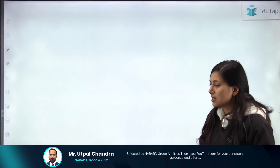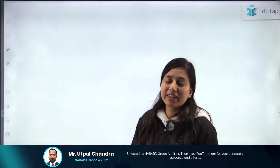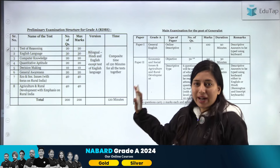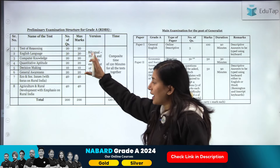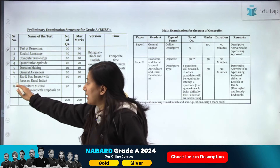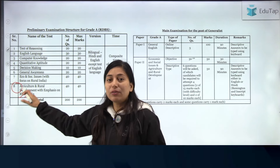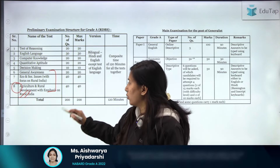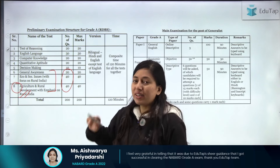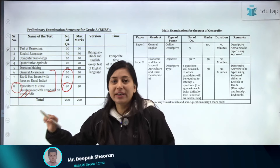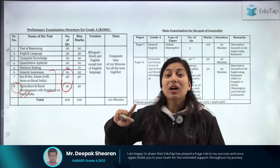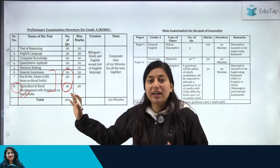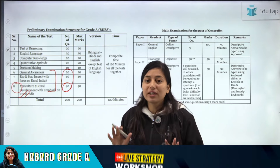Now let's start. Talking about the importance of Agriculture and Rural Development: it is important for your Phase 1 and Phase 2. In Phase 1, there are 8 subjects, and one of them is Agriculture and Rural Development, which is part of the merit section. Out of the 100 merit marks, 40% is allotted to Agriculture and Rural Development — meaning you cannot skip it. You need to clear the minimum and score enough to clear the overall cut-off.